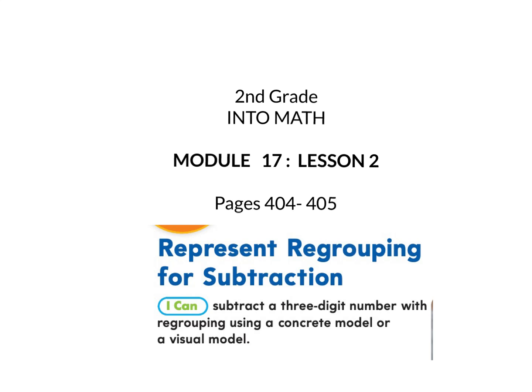This is IntoMath second grade module 17 lesson 2. We will be on pages 404 to 405 and our I can statement is I can subtract a three-digit number with regrouping using a concrete model or visual model. Please gather your workbook and a pencil and turn to page 404.